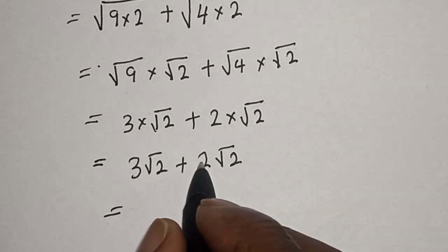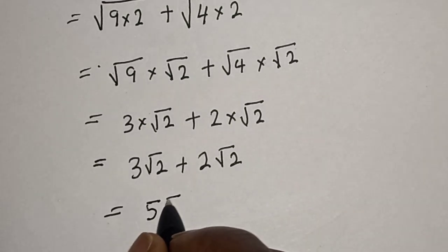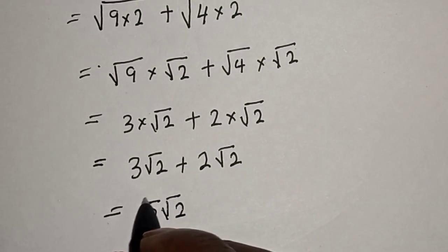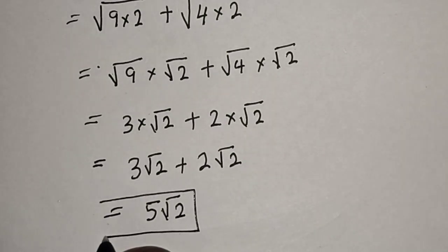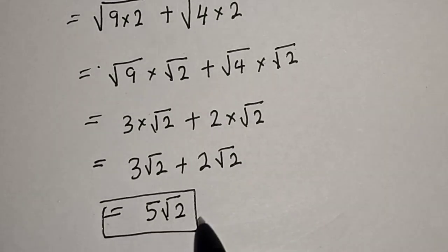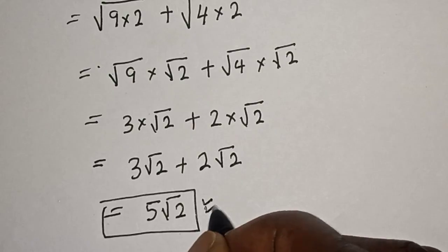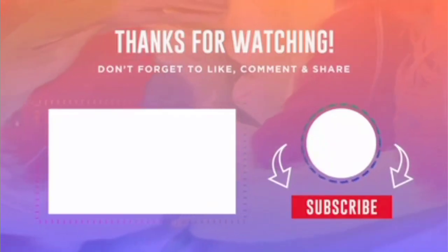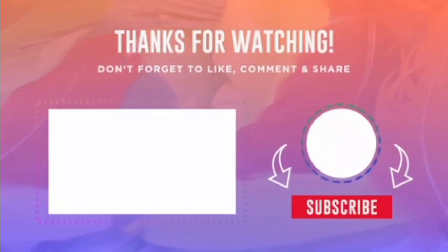3 root 2 plus 2 root 2 equals 5 root 2, and this is the final answer. Like, share, comment, and subscribe. Thank you, bye bye.